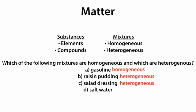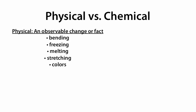D, salt water. We use that as an example of a homogeneous mixture. Because when you dissolve salt and water, it disappears and makes a uniform mixture, which is homogeneous. The next topic we're going to talk about is physical versus chemical properties and changes.